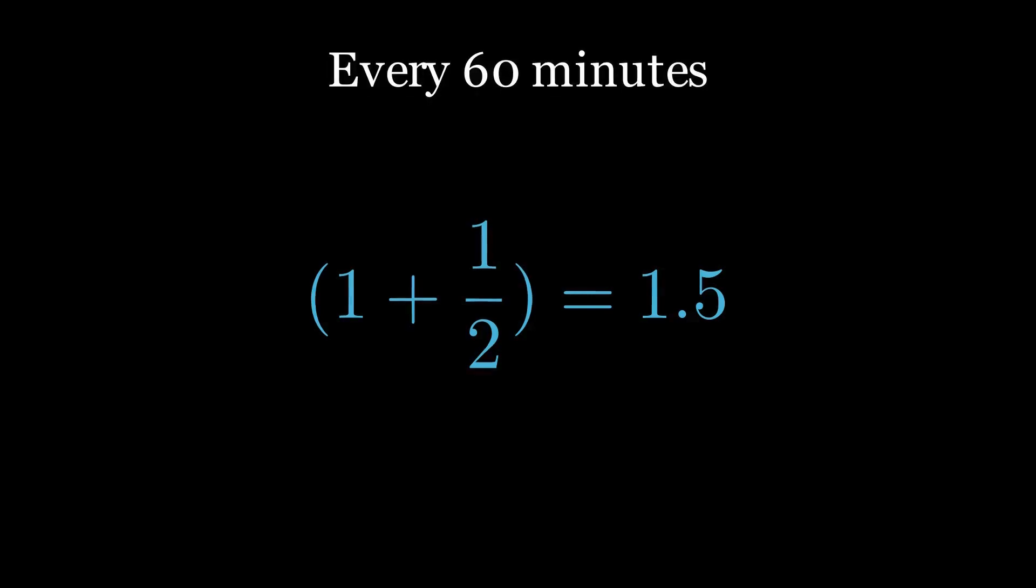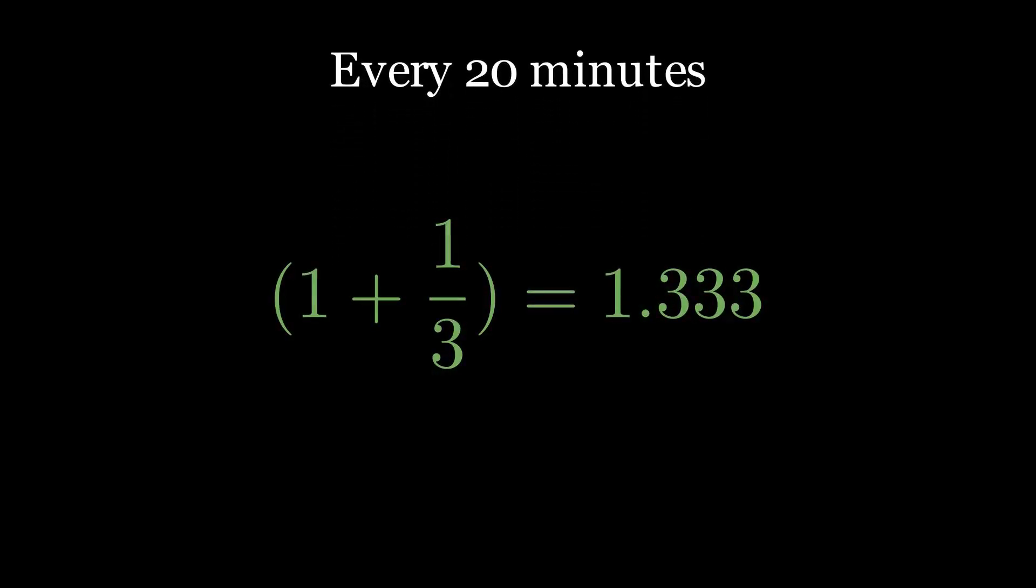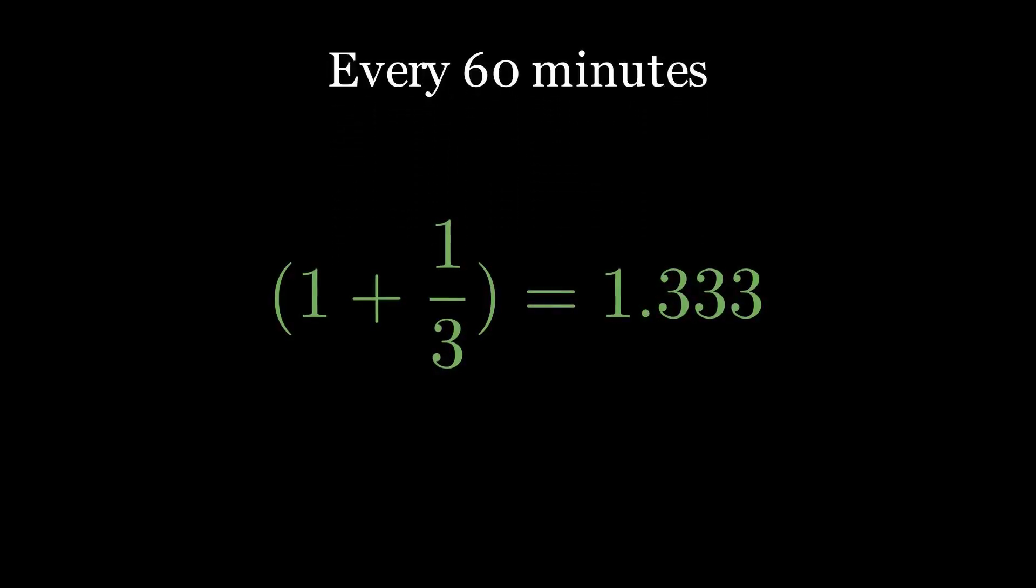Since in one full hour they should still roughly double, each half hour should increase the population by one plus one half. After one full hour, two half hour periods, the population is... If we divide time into three intervals of 20 minutes, then the bacteria grow by each step.